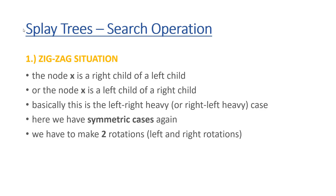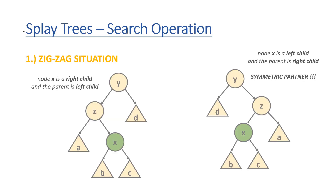Let's talk about the zigzag situation. In this case, node x — the node we have inserted or are looking for — is a right child of a left child, or symmetrically, a left child of a right child. This is the so-called left-right heavy or right-left heavy case. We have to make two rotations: a left rotation and a right rotation. For example, node x is a right child of its parent, and the parent is a left child of its grandparent. We make a left rotation on the parent node (node z), and then a right rotation on the grandparent node (node y).